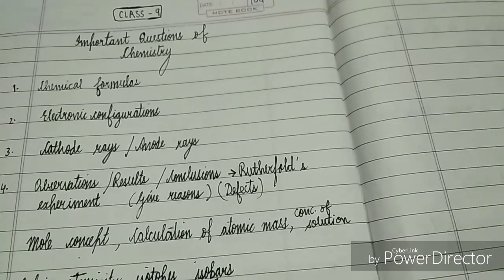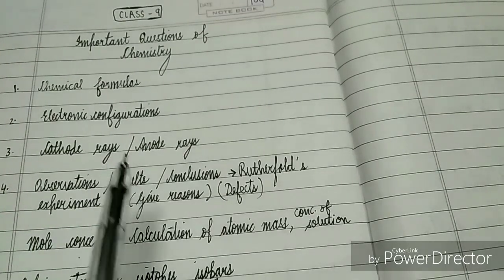The next important thing is about cathode rays and anode rays. You should know their definitions. Sometimes in one-mark questions, you are asked either the definition, or you are given the definition and you have to write whether it is cathode or anode ray.